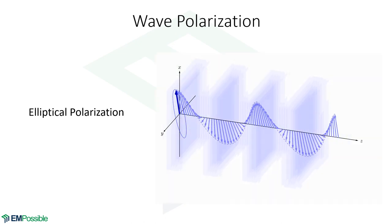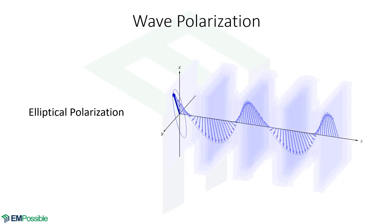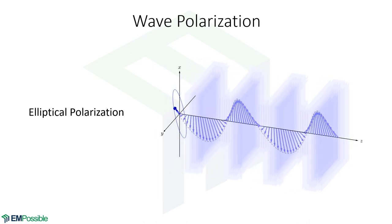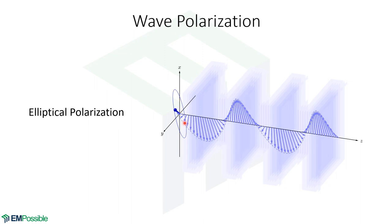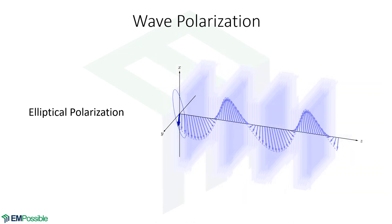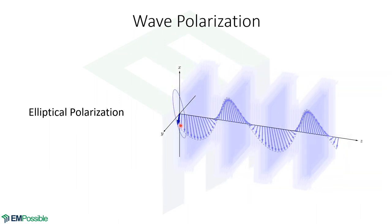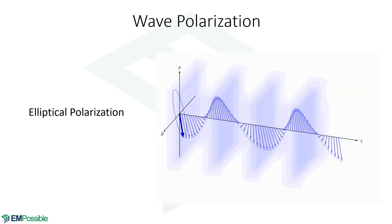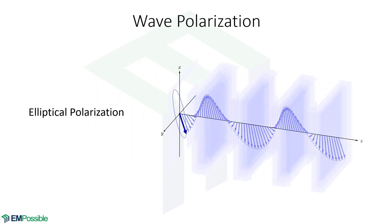When the electric field traces out an ellipse, that's called elliptical polarization. About 99% of all possible polarizations are elliptical — linear and circular are just special cases. If the short axis of the ellipse goes to zero, it becomes linear polarization. If the width equals the height, it becomes circular polarization. We tend to prefer linear or circular polarization in practice.